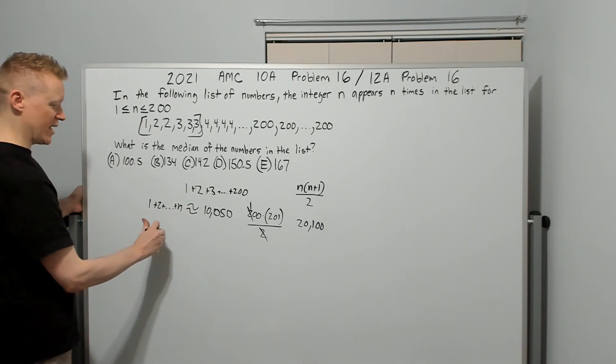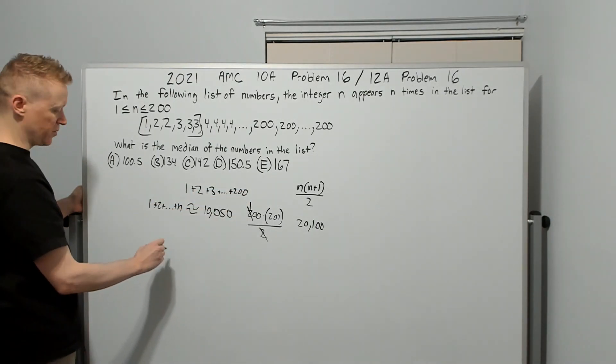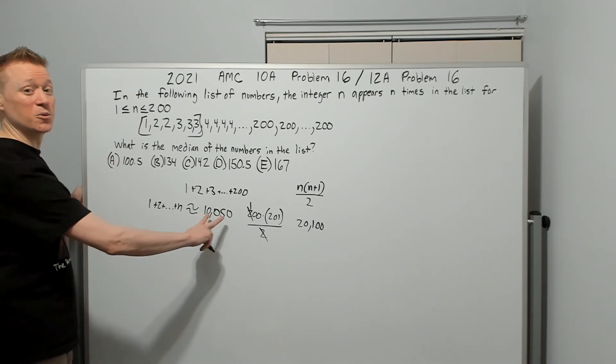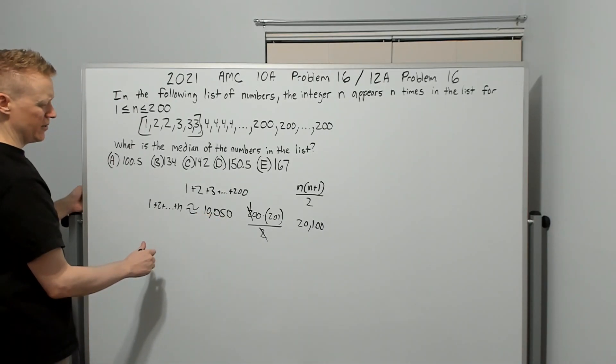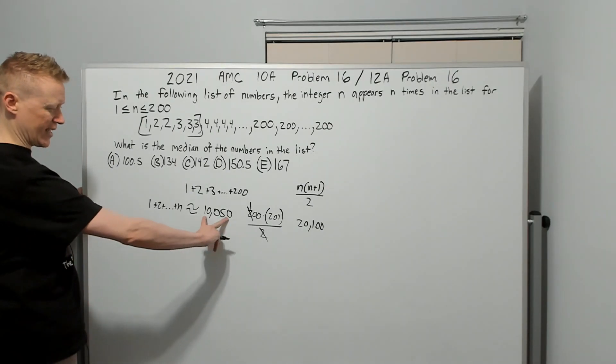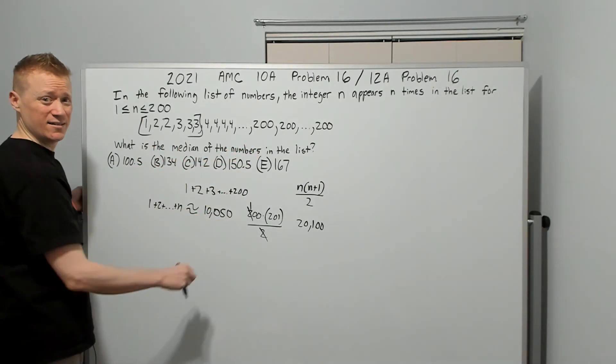This n is different than the one we used before—this is the term that's going to get us close to this term number. We're going to need this again, which is how many numbers are written in the list.